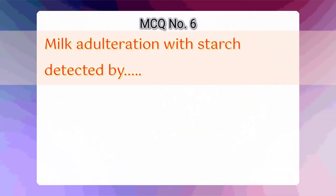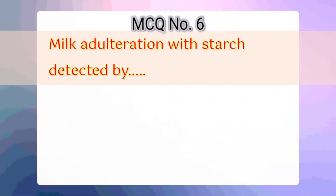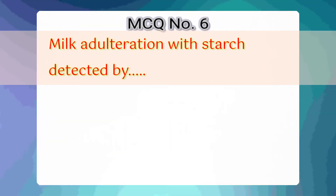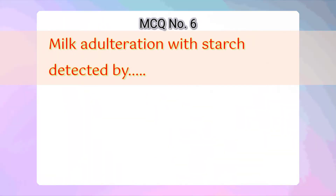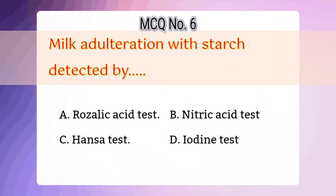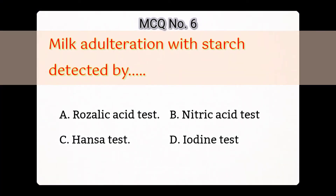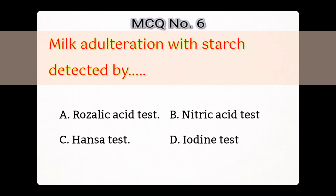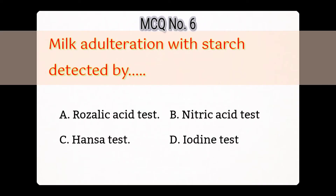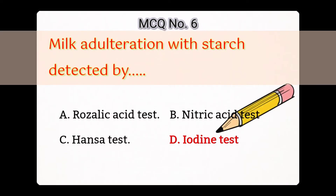6th question: Milk adulteration with starch is detected by — Option A: Rosalic acid test, B: Nitric acid test, C: Hansa test, D: Iodine test. Answer is D: Iodine test.